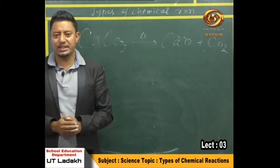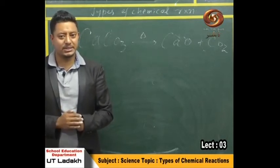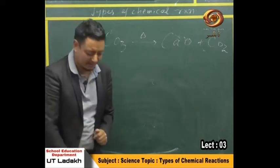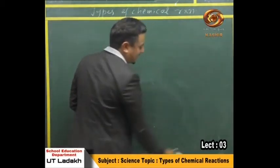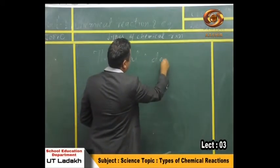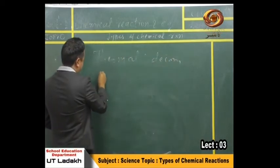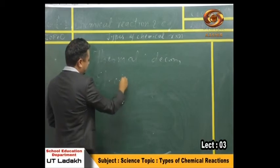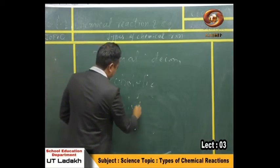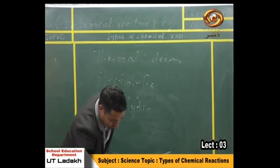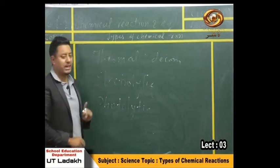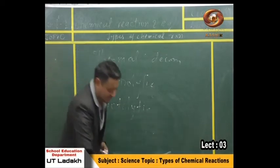There are three types of decomposition reaction. One is thermal decomposition, another is electrolytic decomposition, and the last one is photolytic decomposition. These are the three types. Let's study them in a little more detail.